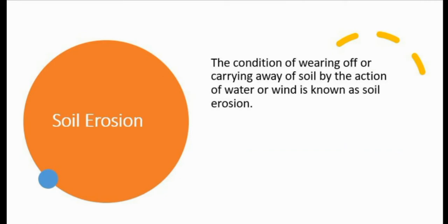So what is soil erosion? Soil erosion is the wearing or carrying away of soil by the actions of water or wind. When the topsoil is being removed or taken off by water or wind, this is called soil erosion.